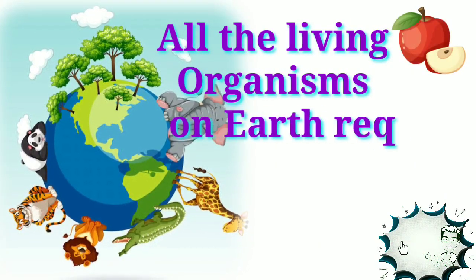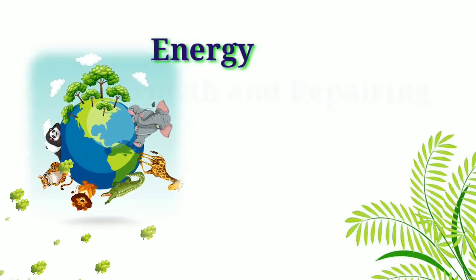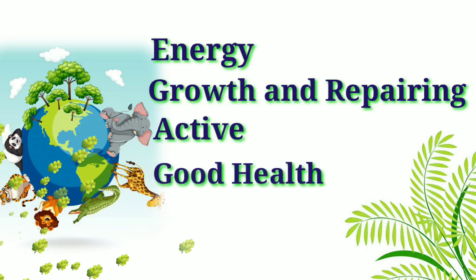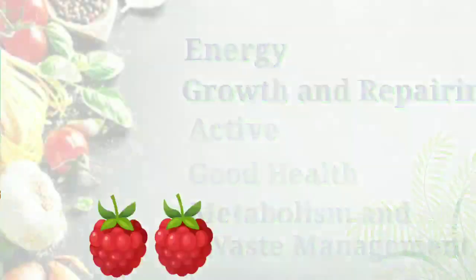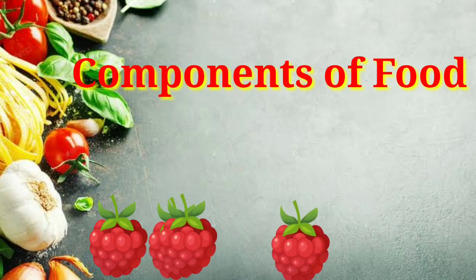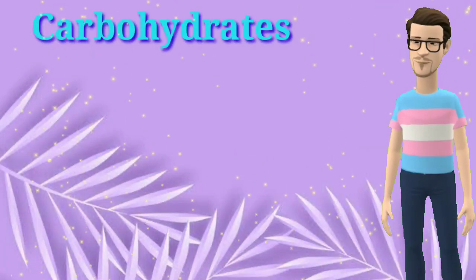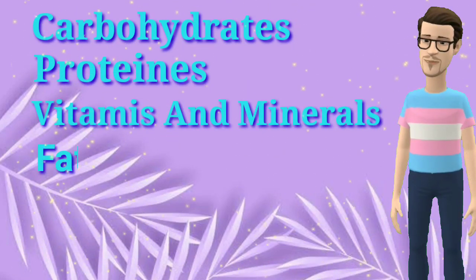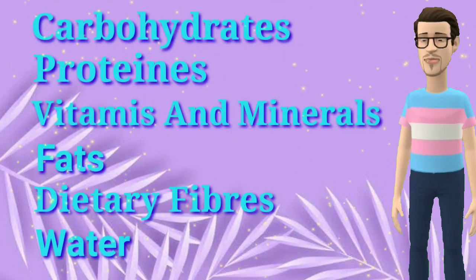Dear students, in 6th standard we have learnt that all the living organisms on earth require food, and we have also learnt why food is necessary — because it gives energy, it helps in growth and repairing of our body, it keeps our body active, it is needed for good health, and it maintains metabolism and waste management. We also came across the components of food, that is nutrients. Nutrients are of different types: carbohydrates, proteins, vitamins, minerals, fats, dietary fibers, and lastly water.